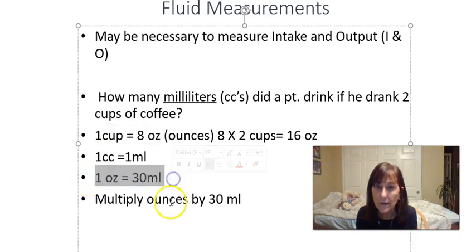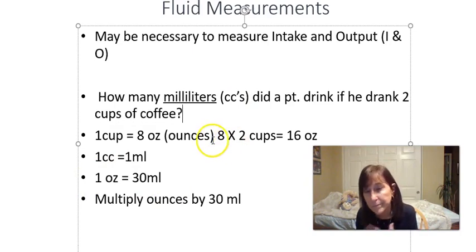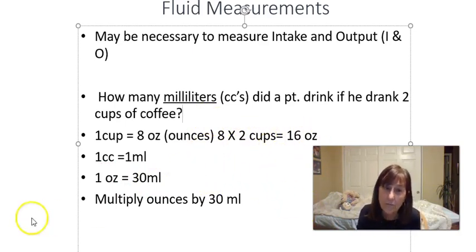If they drank two cups of coffee, you could do it multiple ways, but we're probably going to do eight ounces times two equals 16 ounces and multiply the 16 by 30. However, I probably wouldn't do that. I'd probably do eight times 30 is 240, and then another eight times 30 is 240. It's just easier math for me because it's less than 10.